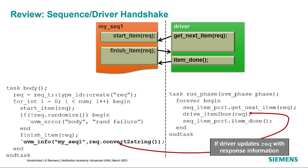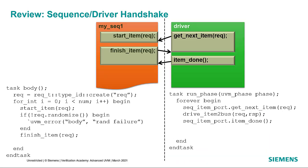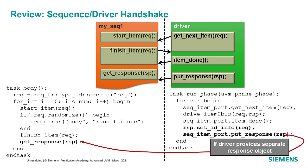Notice we don't pass an argument to itemDone when either no response is required or the driver has filled in a response field of the original request object with the results. When finishItem returns, the sequence still has the handle to that same request, so we can use it including any response information the driver filled in. Optionally, the driver may create a separate response object. In that case, the sequence needs to be synchronized with the driver — after finishItem the sequence will call getResponse, which blocks until the driver sends the response object.